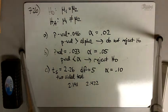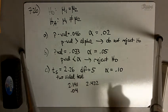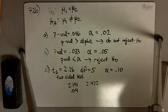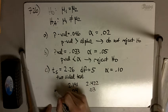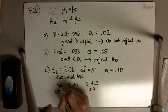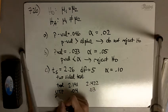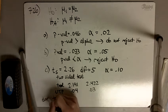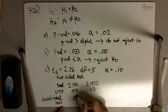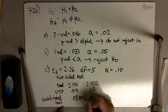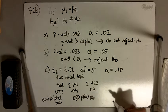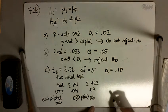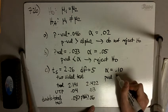2.191 corresponds to an upper tail probability of 0.04, and 2.422 corresponds to an upper tail probability of 0.03. Doubling those for the two-sided test gives us total tail probabilities of 8% and 6%. So our p-value is between 6% and 8%.